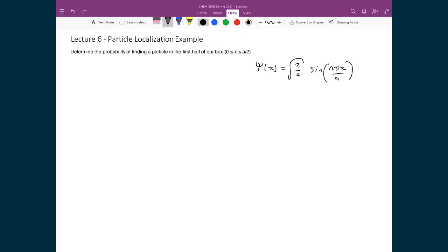I'm just writing it down here explicitly, where I've got psi of x is equal to the square root of 2 over a times sine n pi x over a.